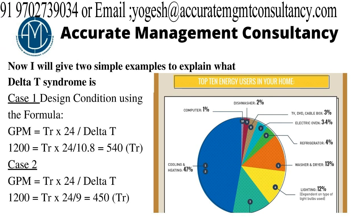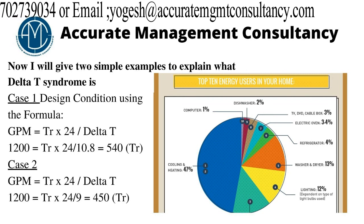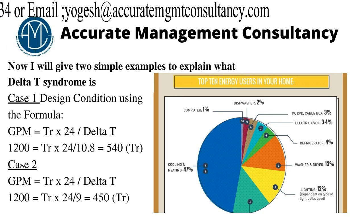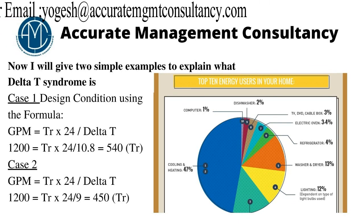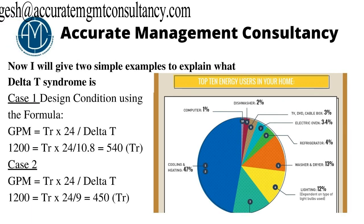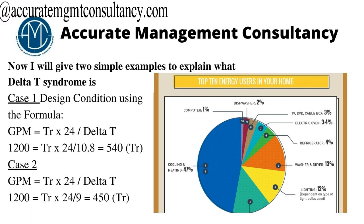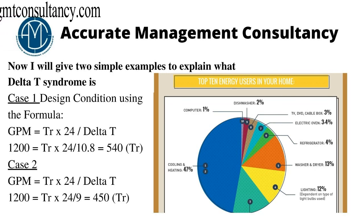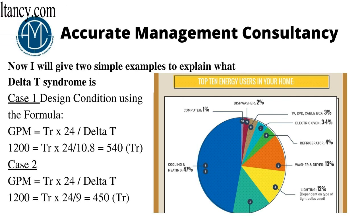In case one, we are getting a tonnage of 540 TR at the ideal Delta T of 10.8°F, whereas in case two with a Delta T of 9°F, we are getting a tonnage of only 450 TR. There is a 17% reduction in tonnage with just a small variation in Delta T. I would like to ask you, friends — have you experienced this in your plants?